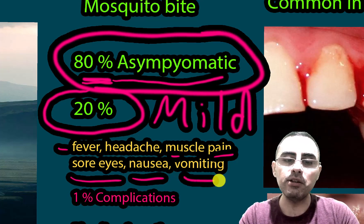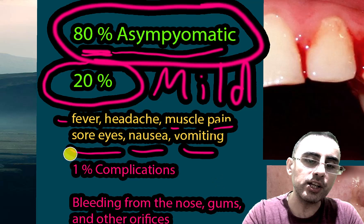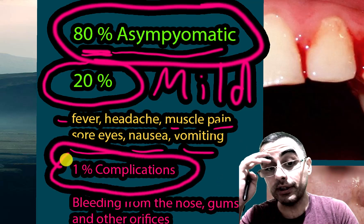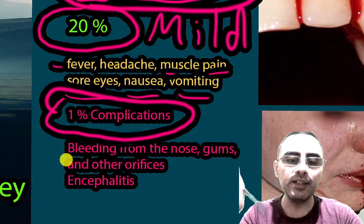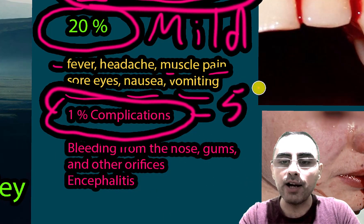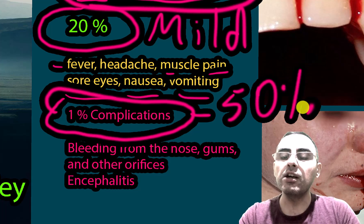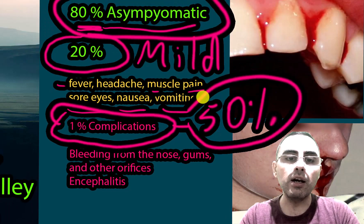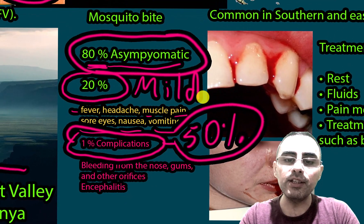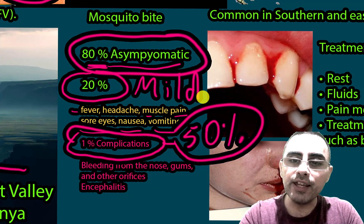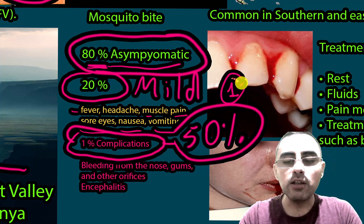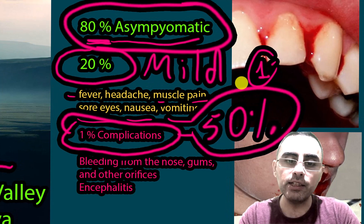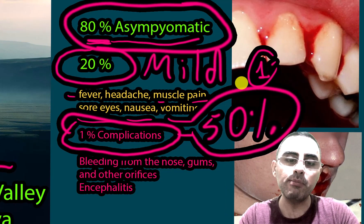But why is this infection important? Because in about one percent of cases there is severe disease, and 50% of those severe cases cause death — meaning they are fatal. So the fatality rate is less than 1% but close to it, which is why this disease is considered important.